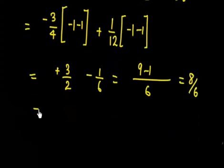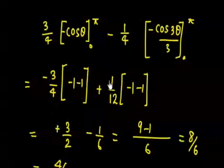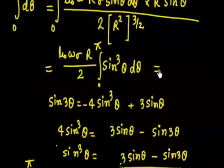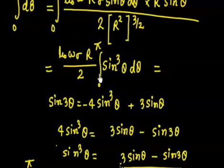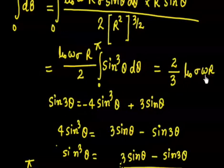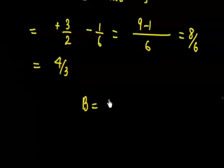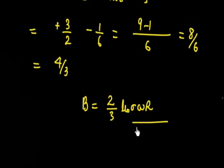Plugging the integration result of 4/3 back in: B = (μ₀ωσR/2) × (4/3) = (2/3)μ₀σωR. So the total magnetic field at the center of the rotating charged sphere is B = (2/3)μ₀σωR. If you can remember this formula, that's nice, though deriving it is the key skill.